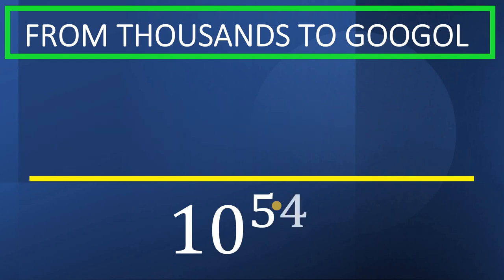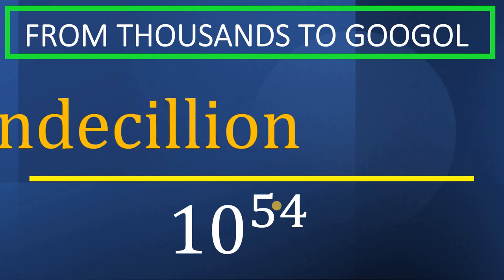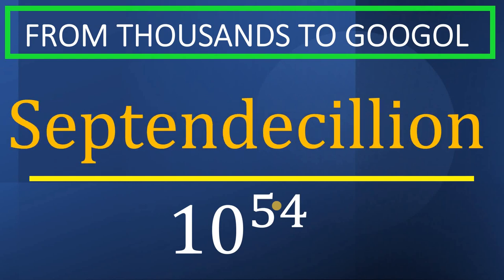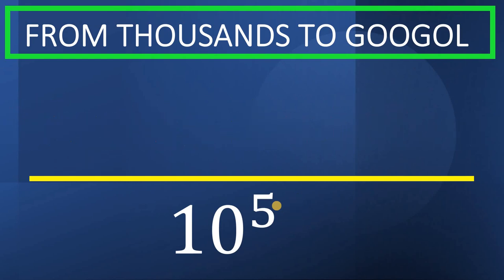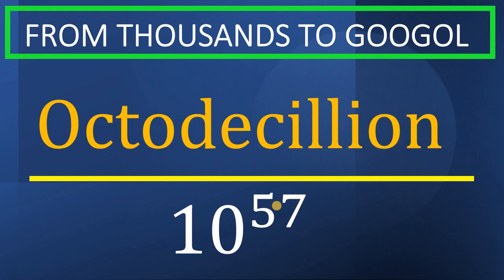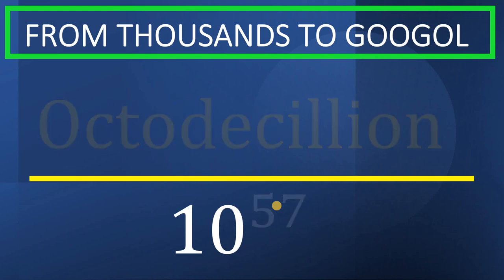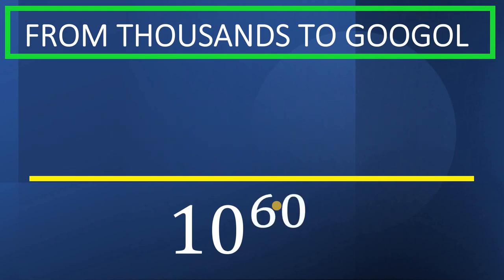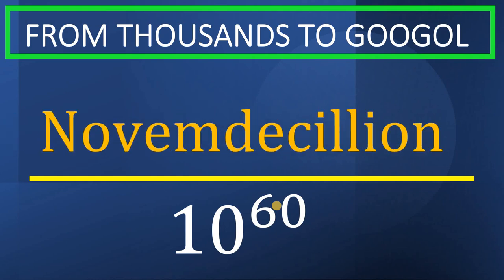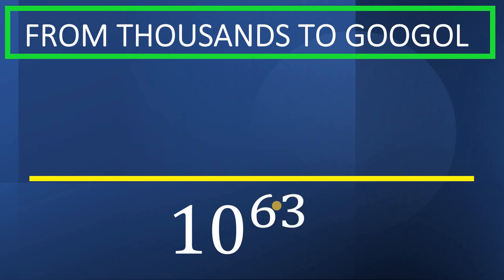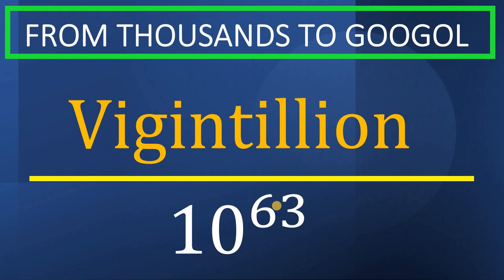10 raised to 54, this is called septendecillion. 10 raised to 57, this is called octodecillion. 10 raised to 60, it is called novemdecillion. 10 raised to 63, it is called vigintillion.